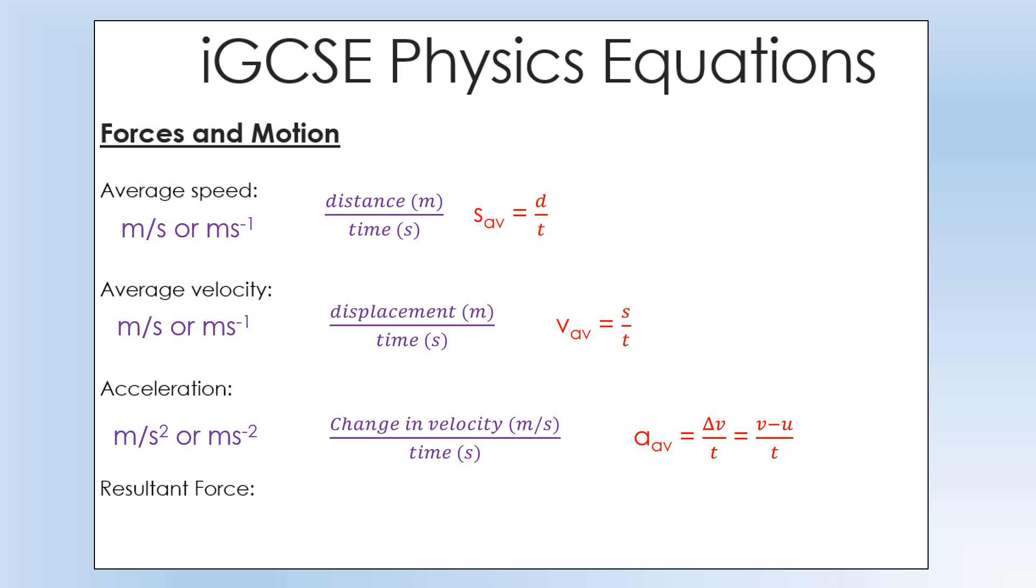To calculate resultant force we need Newton's second law effectively, which says resultant force equals mass times acceleration. Resultant force I will usually write as sum of F equals MA, but this actually comes from the expression actually resultant force is change in momentum per second. That's the more general expression of Newton's second law.